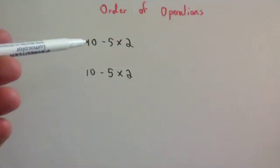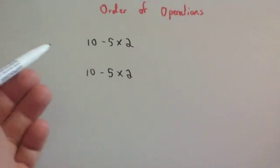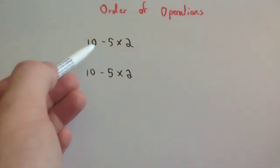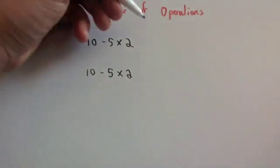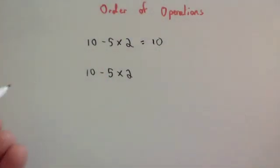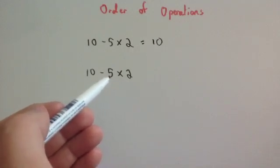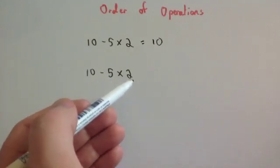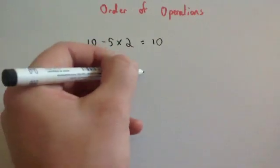I put up 10 subtract 5 times 2, and I got two answers. Some students said they had to do 10 subtract 5 first — 10 subtract 5 is 5 — and then times by 2, giving an answer of 10. Other students said they had to do the multiplication first: 5 times 2 is 10, and 10 take away 10 is equal to 0.